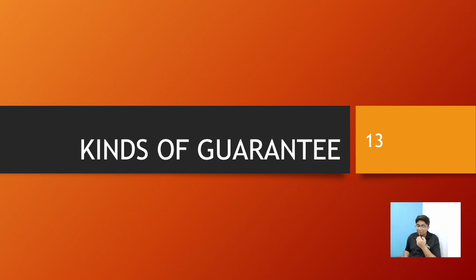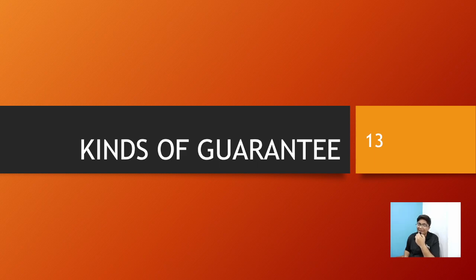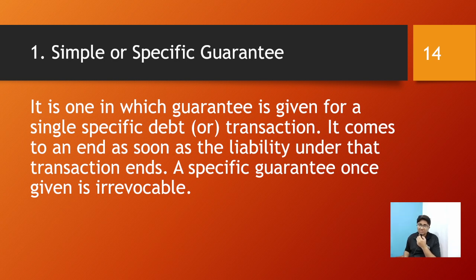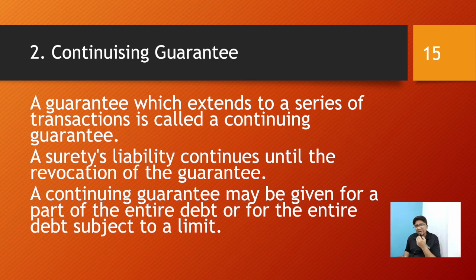Now let's look at the different kinds of guarantee. Number one: simple or specific guarantee. This is a guarantee given for a single specific debt or transaction. It comes to an end as soon as the liability under that transaction ends. A specific guarantee once given is irrevocable. It is for one single transaction — as soon as the debt is paid by me or the surety, it is over.